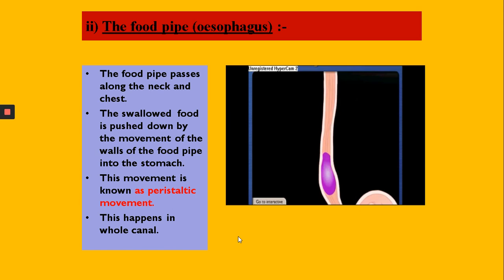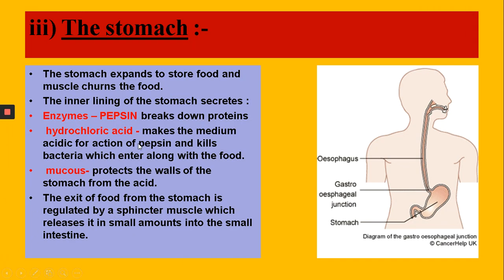The next part is the stomach, which is a very important part of our digestive system. The stomach walls also have muscles which churn the food, converting it into a paste of smaller particles. The inner wall of the stomach also has secretions — it secretes the enzyme pepsin. Pepsin helps in the digestion of protein. Pepsin can only work in an acidic medium; it cannot work in a basic medium.